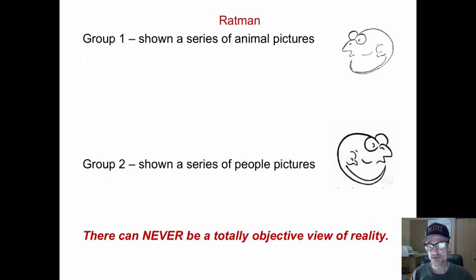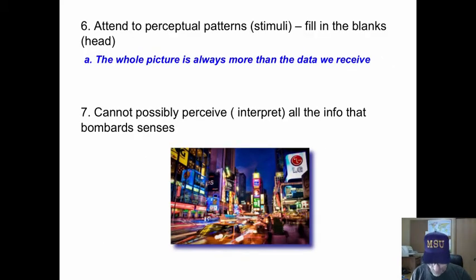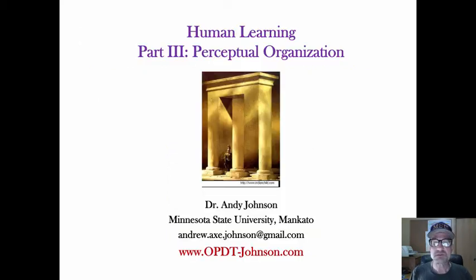There can never be a totally objective view of reality. So, we attend to the perception, perceptual patterns, and we fill in the blanks. The whole is greater than the sum of its parts. It's more than the data that we receive. We cannot possibly perceive and interpret all the information that bombards our senses. It would just be too much. It would be overwhelming. It would not be efficient. Thus, we attend to some, ignore the other. We take in only patterns, and we fill in the blanks.